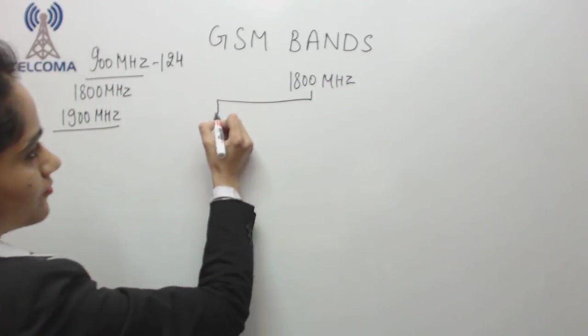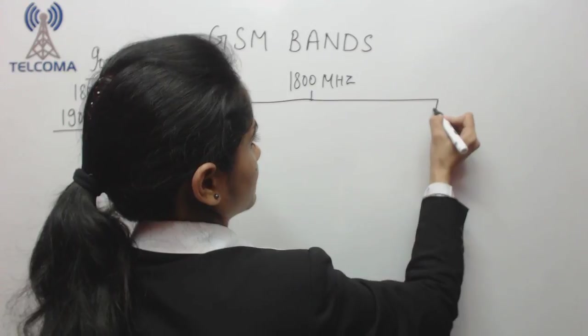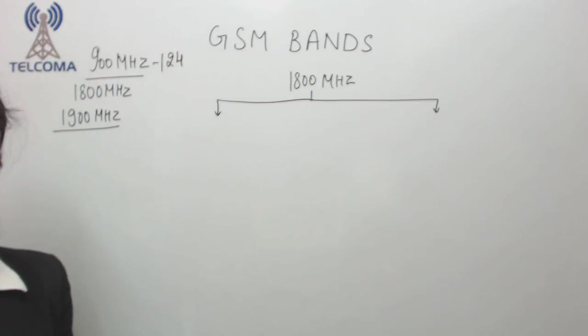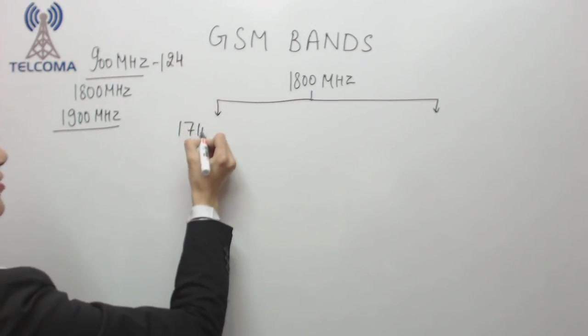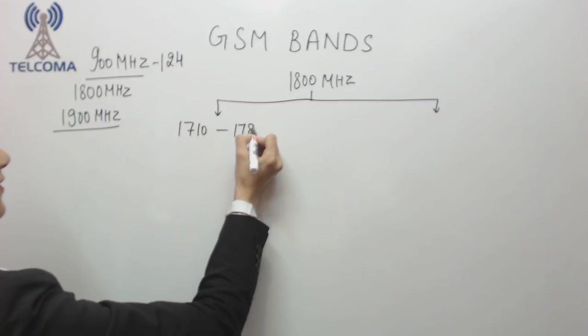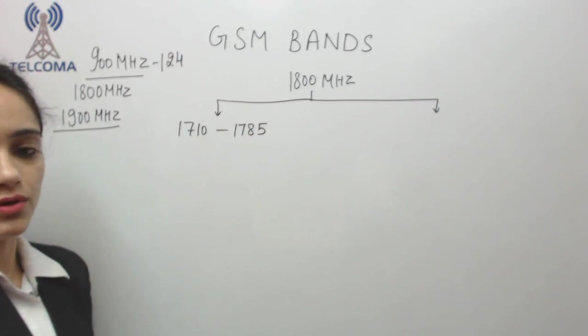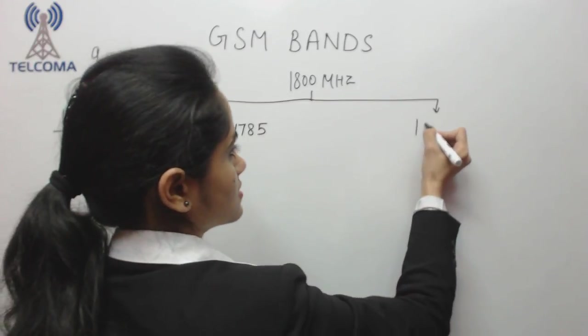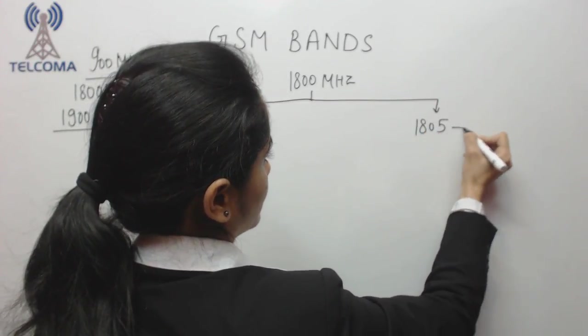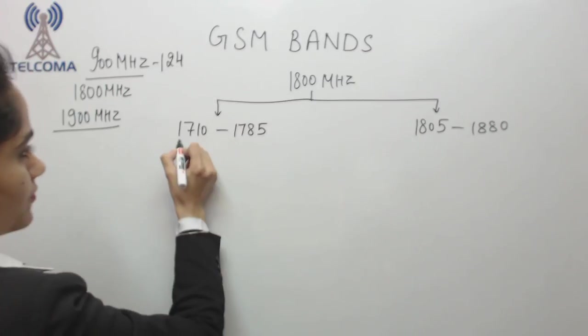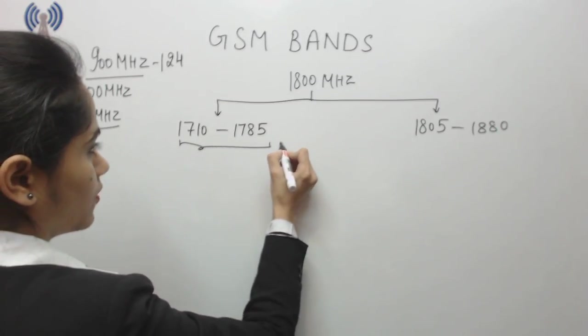This is again FDD, frequency division duplex mode. It is divided from 1710 to 1785 for uplink, and for downlink we have 1805 to 1880. This set of frequencies for uplink and this set for downlink.